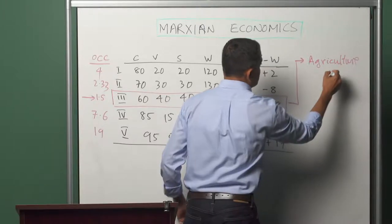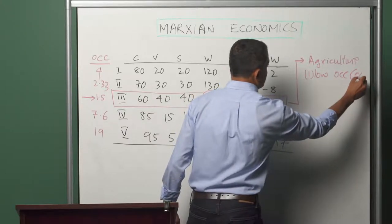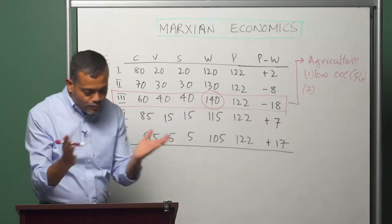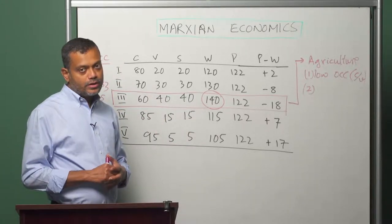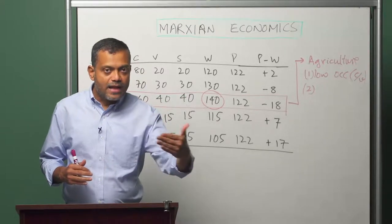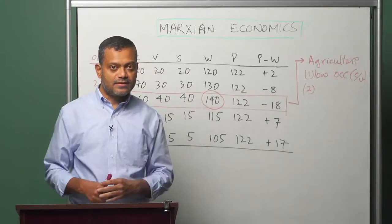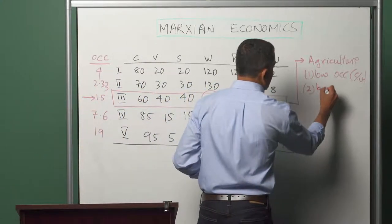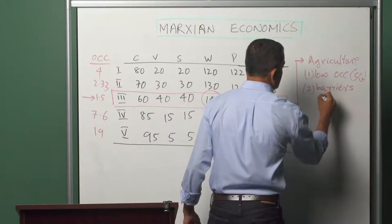Agriculture during Marx's time had two properties: low organic composition of capital, and since agriculture used land as the most important input into production, and since all free land had already been used and was under private ownership, that created a barrier to the mobility of capital into agriculture — land could be taken up for production only by displacing some capitalist or landlord who had ownership of that land. So there was low organic composition of capital and the peculiarities of land created barriers to entry of capital.